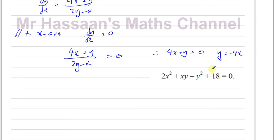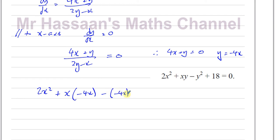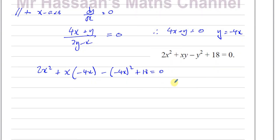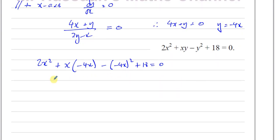To solve simultaneously, you substitute one equation into the other — you don't equate them directly. I'll substitute y equals negative 4x into 2x squared plus xy minus y squared plus 18 equals zero. Replacing y with negative 4x: 2x squared plus x(negative 4x) minus (negative 4x) squared plus 18 equals zero, which gives 2x squared minus 4x squared minus 16x squared plus 18 equals zero.